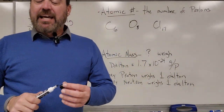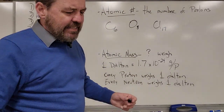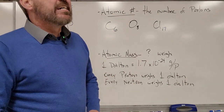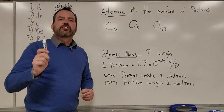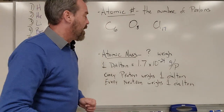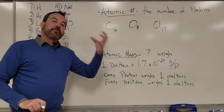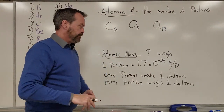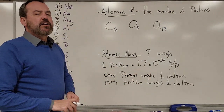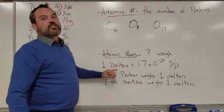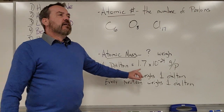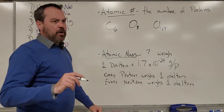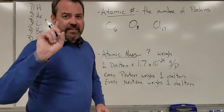The atomic mass, mass number, or atomic weight — all three are asking the same thing: how much does it weigh? To figure out the weight, we add up the protons and neutrons. We measure atoms in Daltons. One Dalton is 1.7 times 10 to the negative 24 grams per particle — a tiny number. Every proton weighs exactly 1 Dalton, and every neutron weighs exactly 1 Dalton.